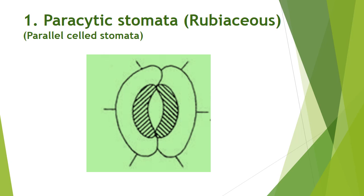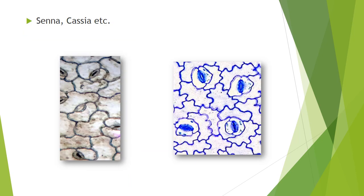The first type is paracytic stomata, also known as rubiaceous stomata or parallel-celled stomata. The axis of the two guard cells and the axis of the two subsidiary cells covering them are parallel to each other — hence the name parallel-celled stomata. Senna and Cassia — most Cassia species or leguminous plants — contain paracytic stomata. In actual microscope images, you can easily see that guard cells are covered by two subsidiary cells which are parallel to the guard cells.